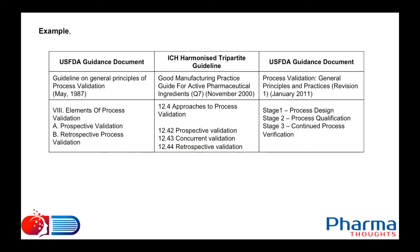Guidance documents provide input on how a process can be validated. The 1987 guidance states under section 8, 'Elements of Process Validation,' that process validation can be performed in two forms: prospective validation or retrospective process validation. The November 2000 ICH Q7 guidance states under section 12.4, 'Approaches to Process Validation,' that it can be performed in three ways: prospective validation, concurrent validation, and retrospective validation. The January 2011 US FDA revised guidance states process validation shall be performed in three stages: Stage 1 Process Design, Stage 2 Process Qualification, and Stage 3 Continued Process Verification.